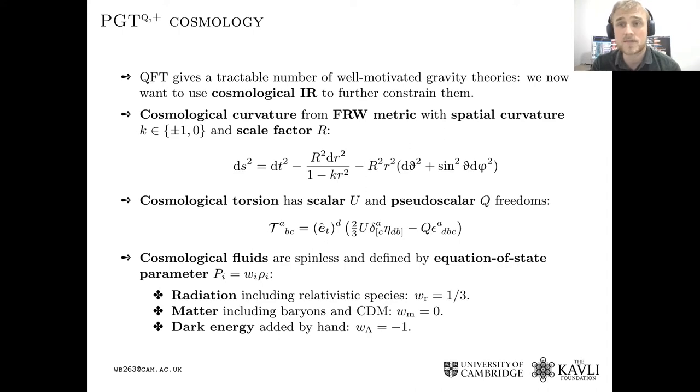So the curvature ansatz is just going to be the FRW metric here, and we consider a general spatial curvature k. And the torsion tensor is, if you impose the cosmological principle, you find that you cannot have more than two degrees of freedom. These are the scalar and pseudoscalar torsion.